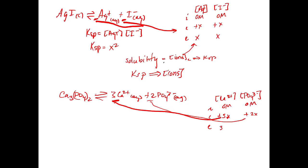So at equilibrium, we're going to get three x and two x. So the Ksp in this case is going to equal the concentration of calcium two-plus cubed times the concentration of phosphate squared.